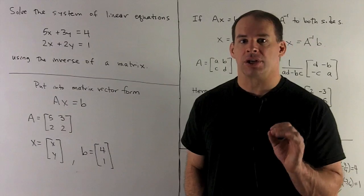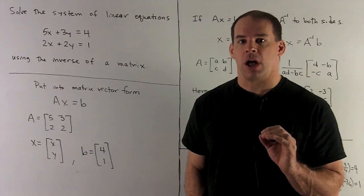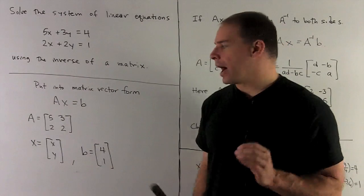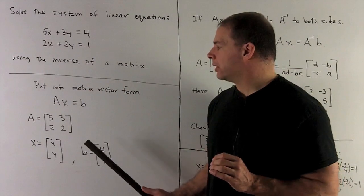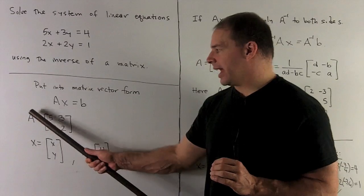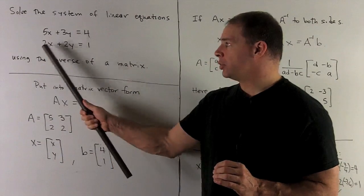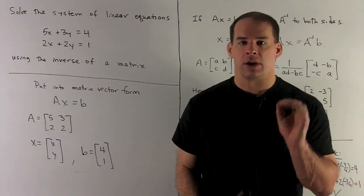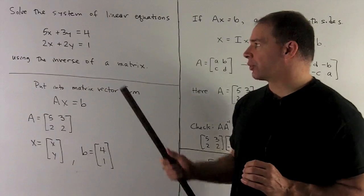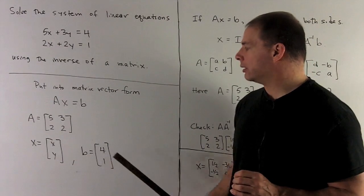For our vectors, x will just be x and y — that's what we're solving for. You should check that A times x gives 5x plus 3y and 2x plus 2y, and our b vector is just the right hand side: 4 and 1.